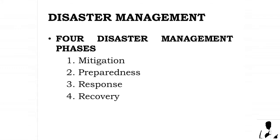There are four disaster management phases to achieve the goals of disaster management: one, mitigation; two, preparedness; three, response; and four, recovery. The length of each phase greatly depends on the severity of the disaster.